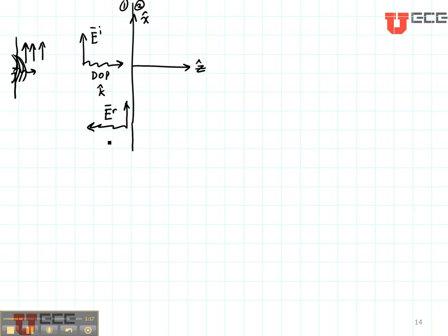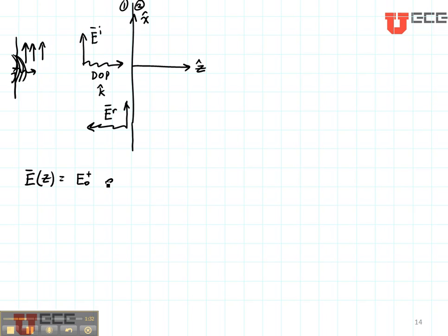Now let's write our equation for the electric field. The total electric field is going to be a sum of these two fields. The incident field is going to have an incident field magnitude that we're going to call E zero plus. It's going to be traveling in the negative Z direction, and we're going to use gamma Z to represent that.